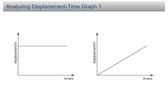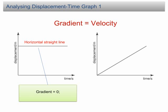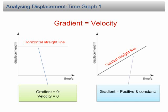Analyzing displacement time graph 1. We have learned that in a displacement time graph, the velocity of the motion is equal to the gradient of the graph. The first graph is a horizontal straight line. The gradient of a horizontal line is 0, hence the velocity is also equal to 0. The second graph is a slanted straight line. For all straight lines, the gradients are constant. Therefore, the graph shows a motion of constant or uniform velocity. The gradient is also positive, showing that the object is moving in the positive direction.